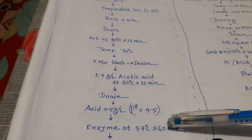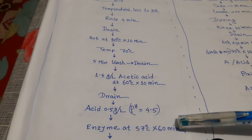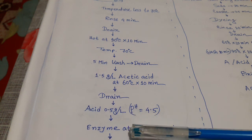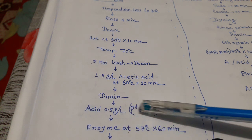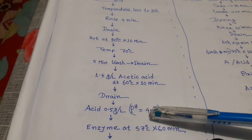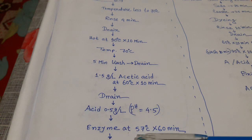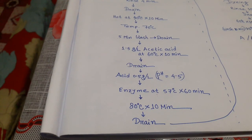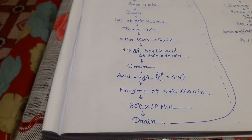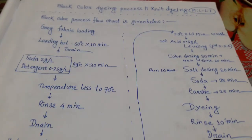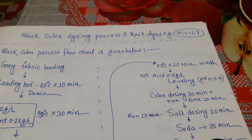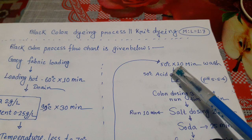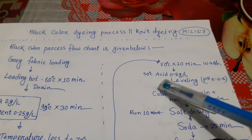Then run enzyme at 57 degrees centigrade for 60 minutes. Acetic acid was used before the enzyme to control the pH of the bath. Then heat to 80 degrees centigrade for 10 minutes and drain.